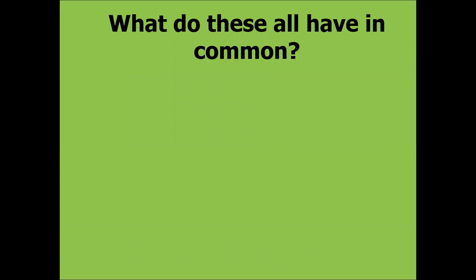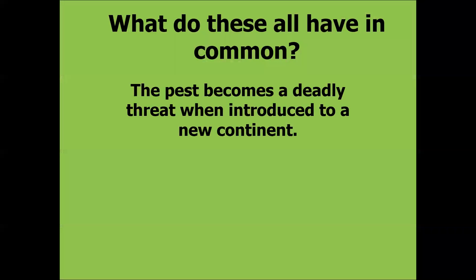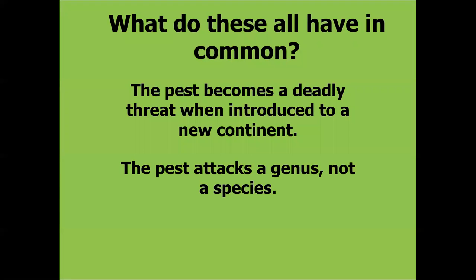So what do chestnut blight, Dutch elm disease, and emerald ash borer — two pathogens and an insect — all have in common? First, each pest became a deadly threat when introduced to a new continent. Chestnut blight, Dutch elm disease, and emerald ash borer are not native to North America. And critically, the pest attacks a genus, not just a species. As we've learned, it doesn't matter whether you have green ash, white ash, black ash, or pumpkin ash — they will all be attacked by the emerald ash borer. Same with American elm, slippery elm, and rock elm.